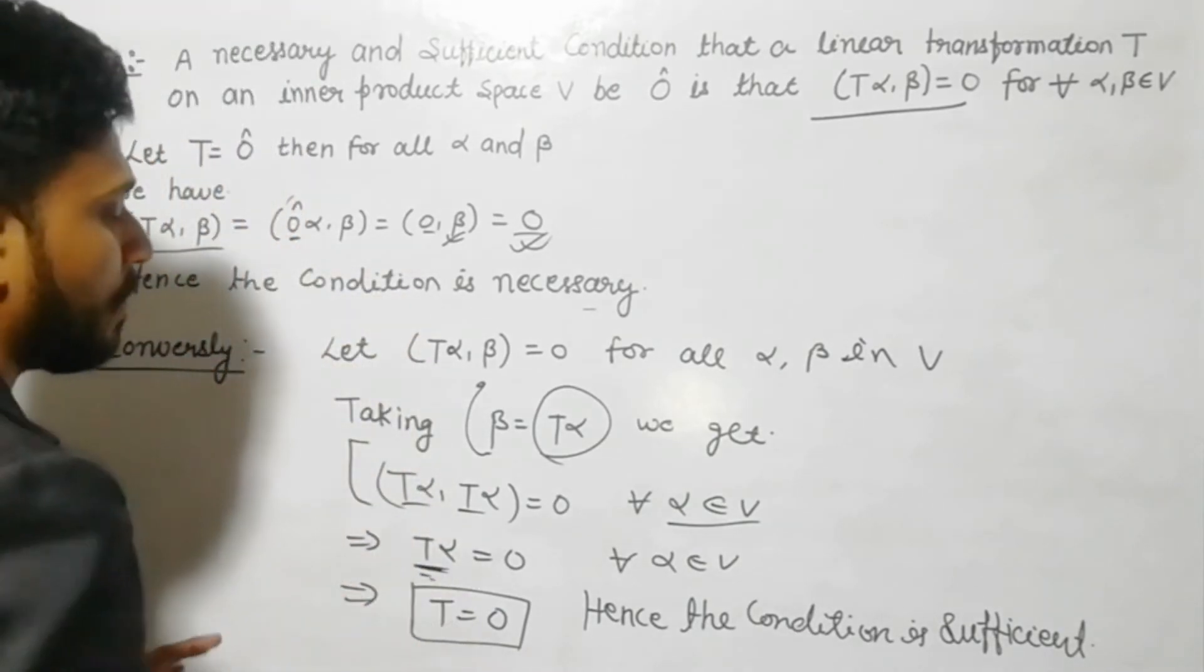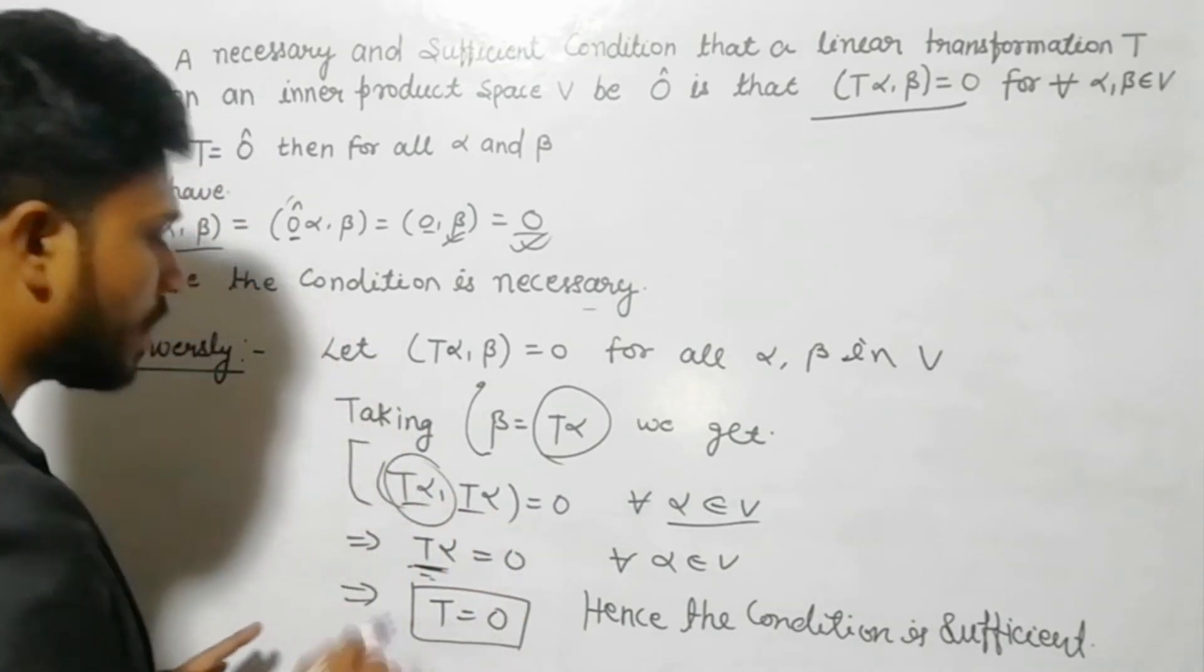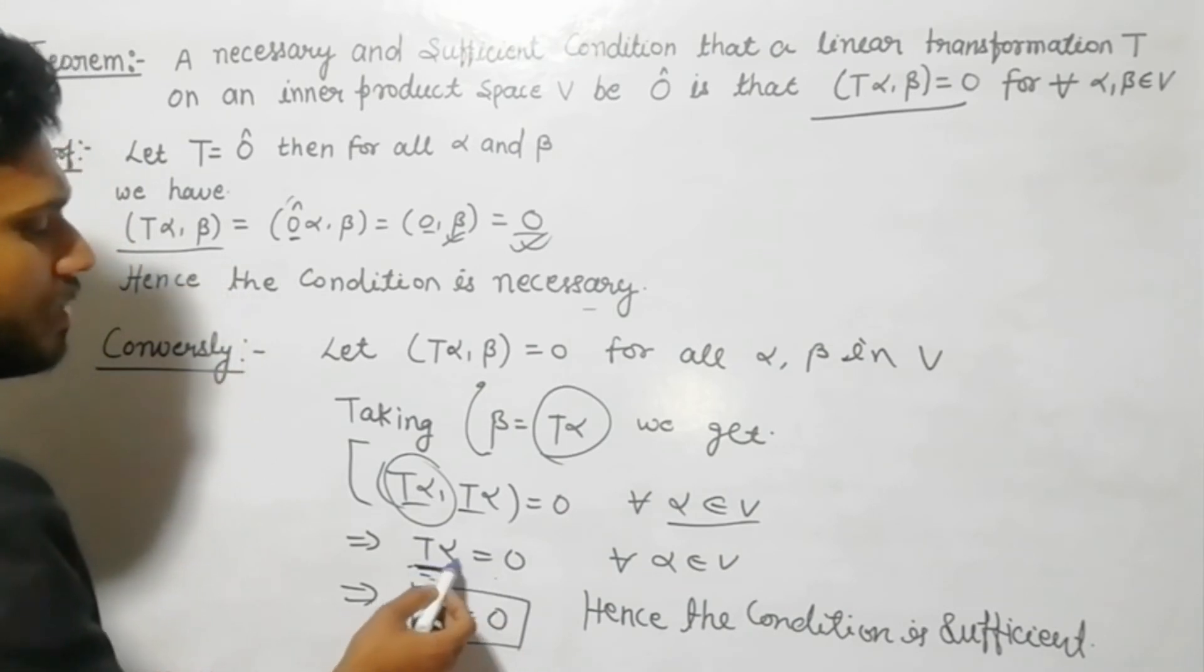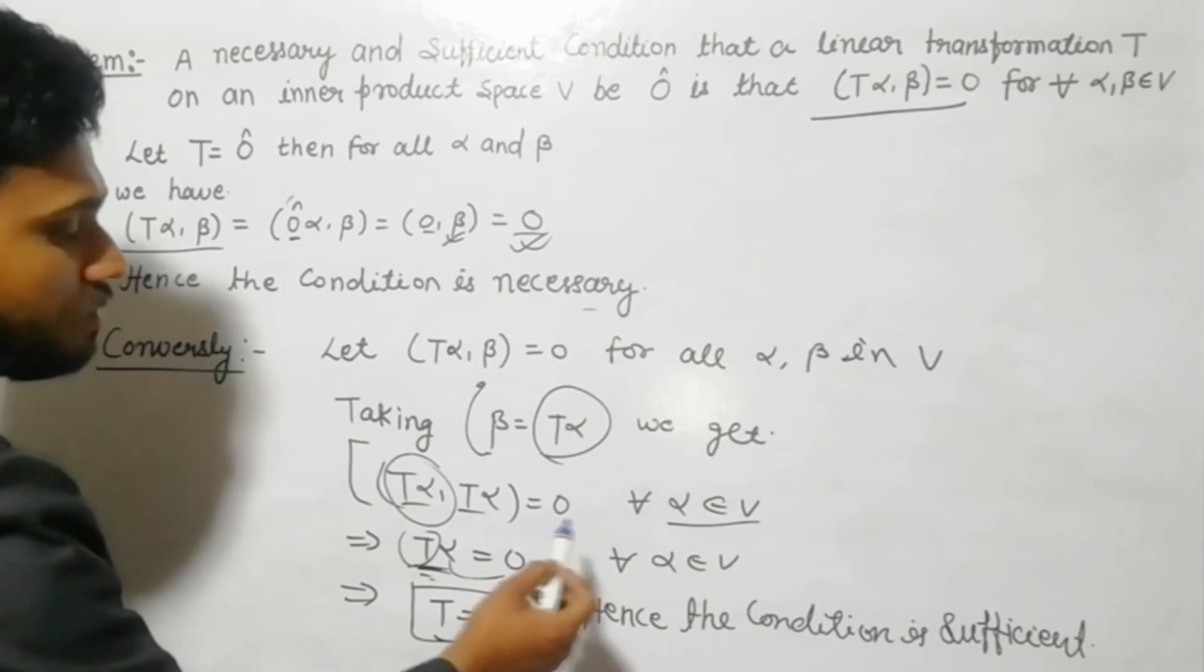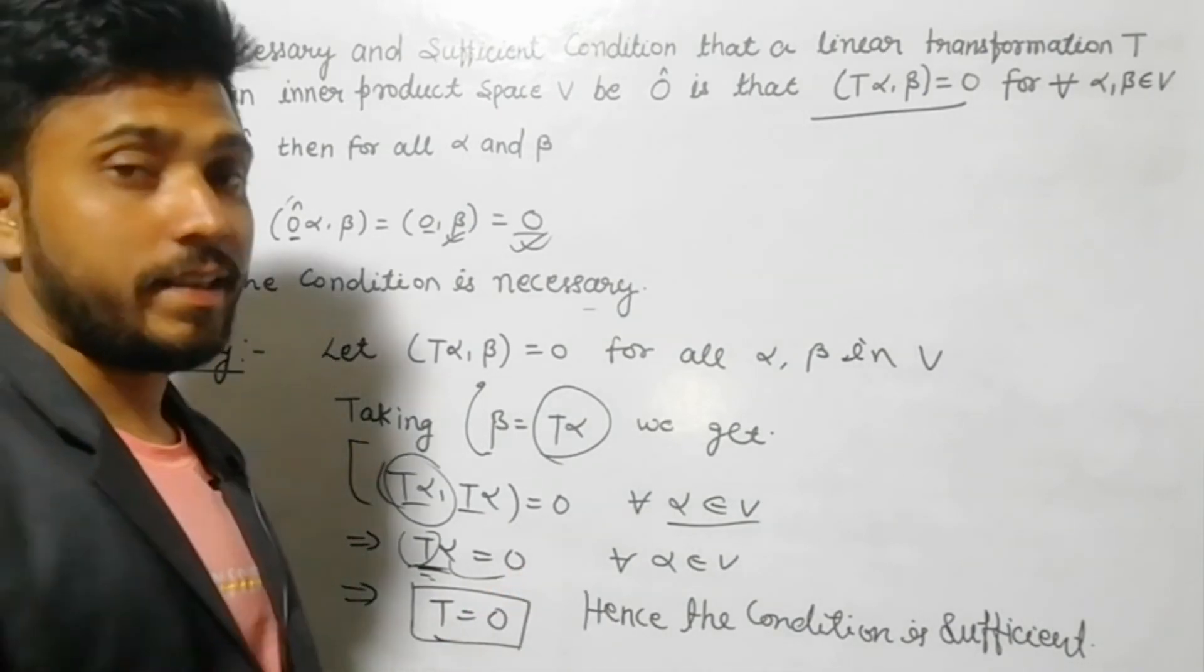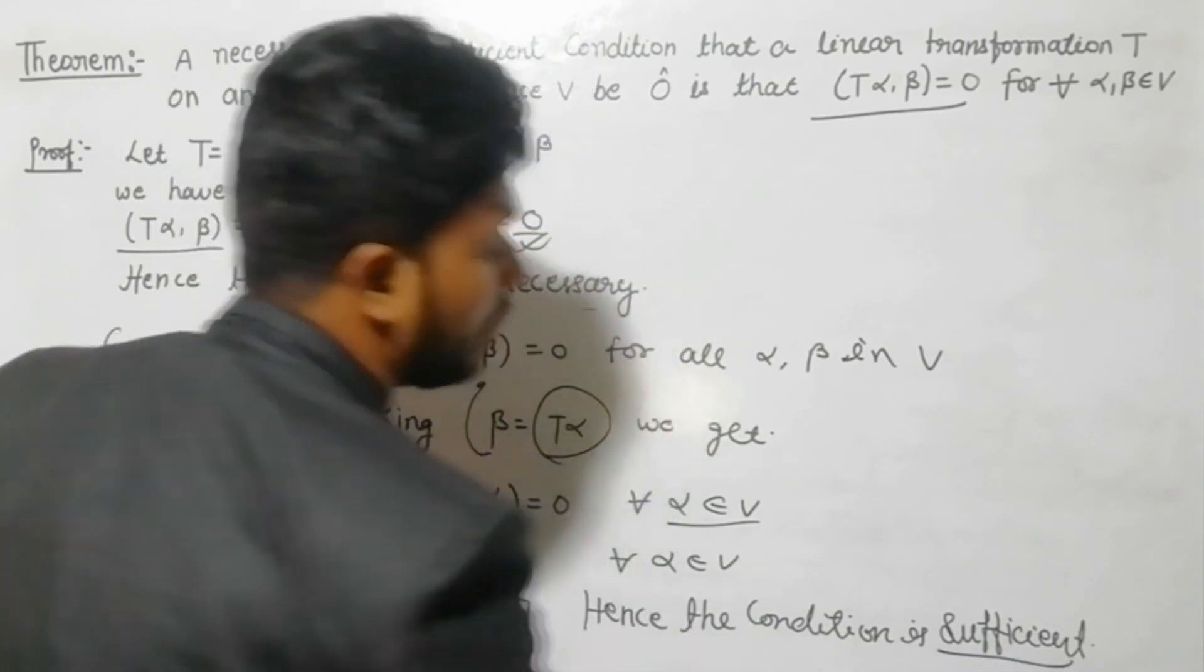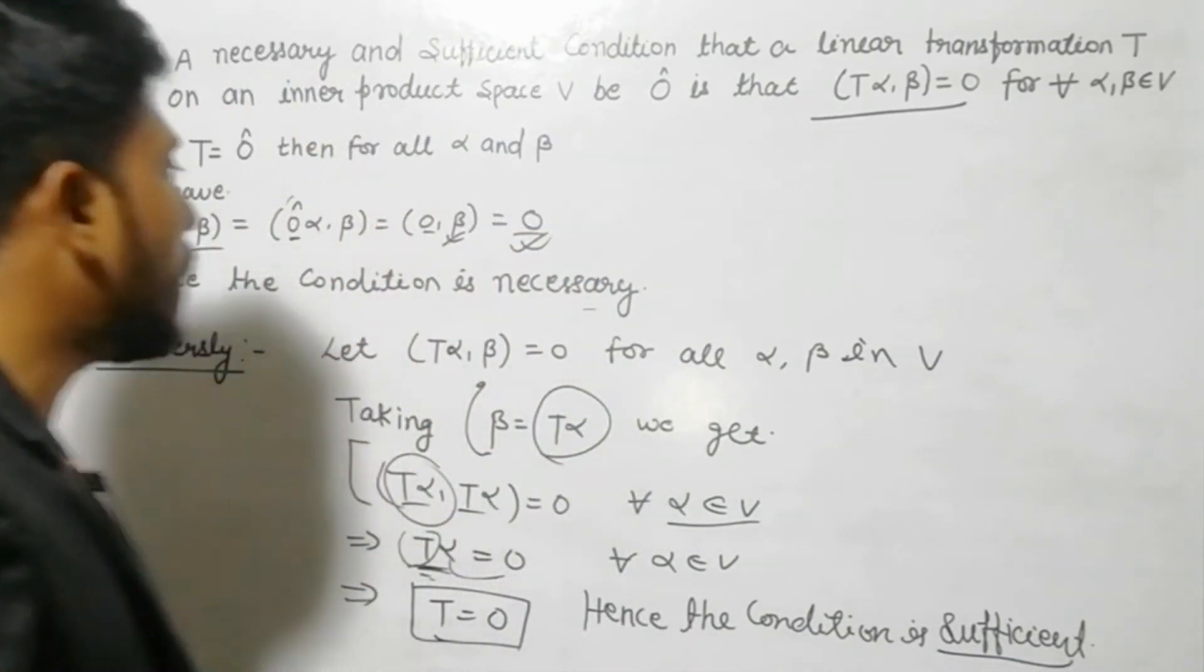Since we have a linear transformation, this will also become zero - it will become zero. This implies T(α) = 0. Or T(α) becomes zero, so this is also a vector which multiplied becomes zero. The transformation T becomes equal to zero, right? Hence the condition is sufficient. So we have shown that this condition is also sufficient.